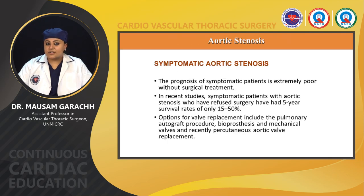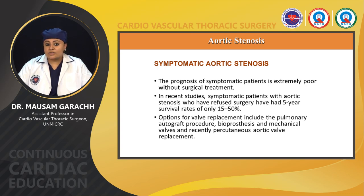The prognosis of symptomatic patients is extremely poor without surgical treatment. In recent studies, symptomatic patients with aortic stenosis who refused surgery had a 5-year survival rate of only 15–50%. Options for valve replacement include the pulmonary autograft procedure (Ross procedure), bioprosthetic and mechanical valves, and recently percutaneous aortic valve replacement.